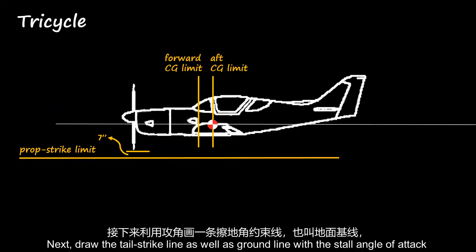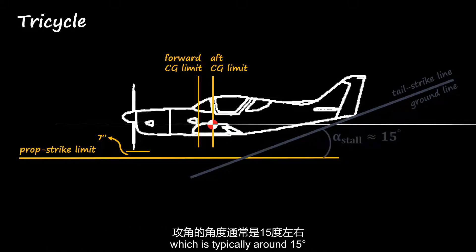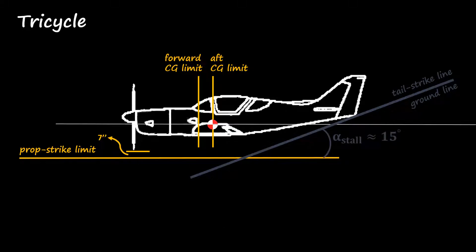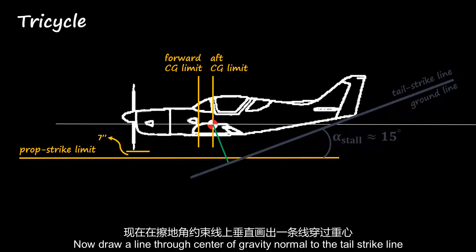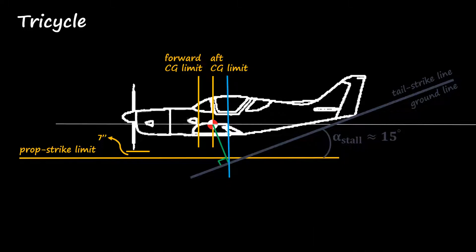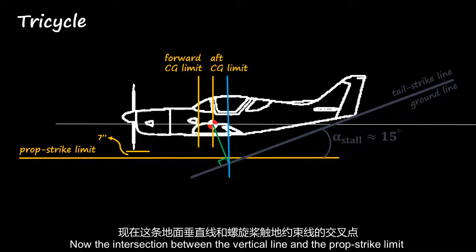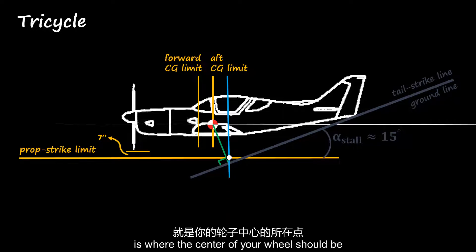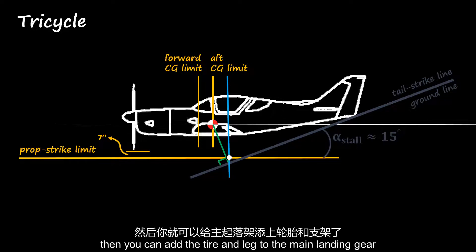Next, draw the tail strike line as well as the ground line at the stall angle of attack, which is typically around 15 degrees. Now draw a line through the center of gravity normal to the tail strike line. Starting from the intersection of these two lines, draw a vertical line. The intersection between the vertical line and the prop strike limit is where the center of your main wheel should be. Then you can add the tire and leg to the main landing gear.